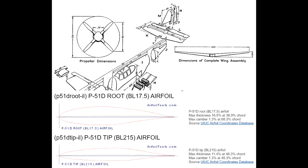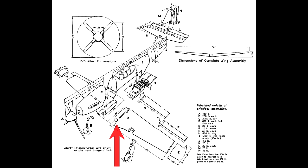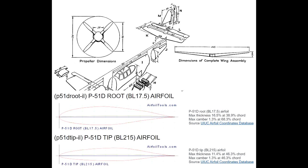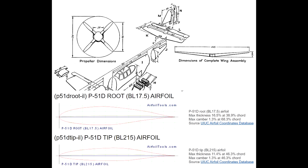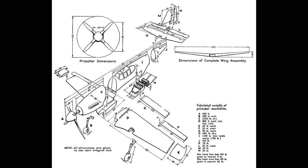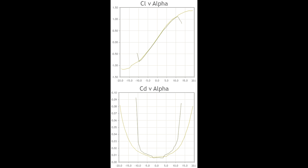Here we have the airfoils for the root and tip of the P51D. As the name implies, the root airfoil is at the junction between the fuselage and the wing, and the tip airfoil is at the tip of the wing. It's typical to have two or more airfoil sections for different parts of the wing. In the P51D's case, the two airfoils are similar except for their thickness, which is 16.5% for the root and 11.4% for the tip. The thicker wing at the root is used to make room for the landing gear and more fuel, and for a structural reason we'll get to later.